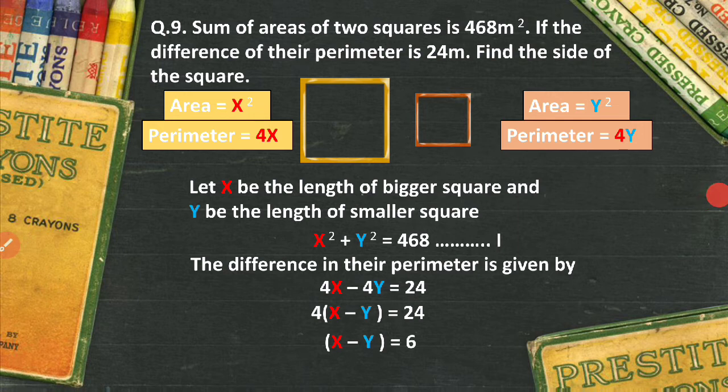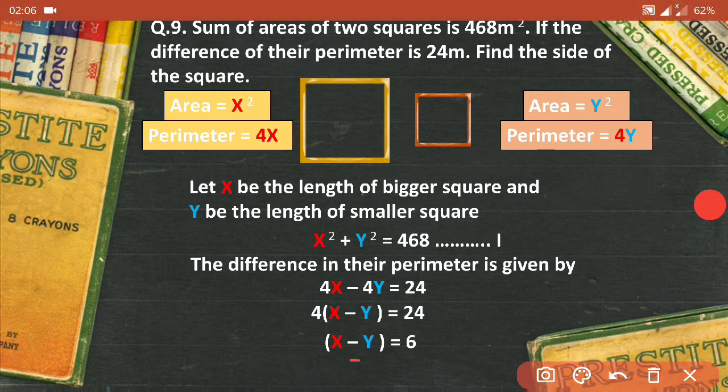So it will become x minus y equals to 24 upon 4, which will become 6 after dividing. So here I can write this minus y which is on the left hand side, I can take it over here and it will become x is equal to 6 plus y.